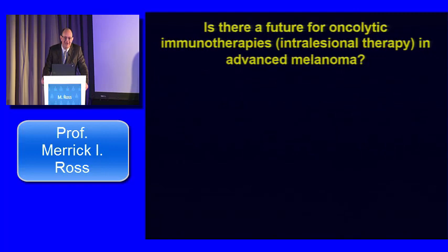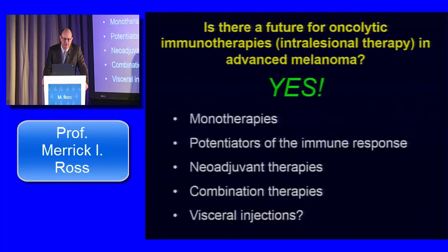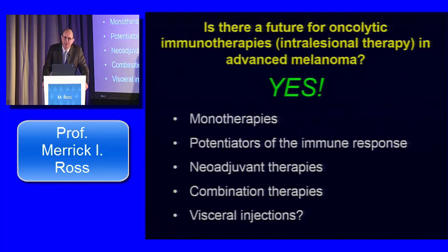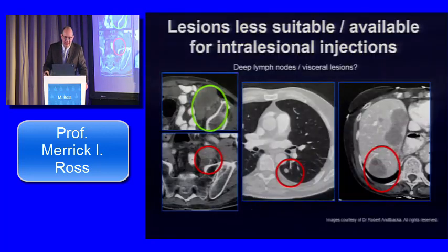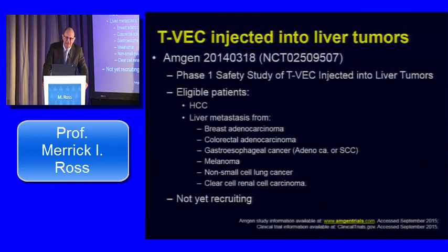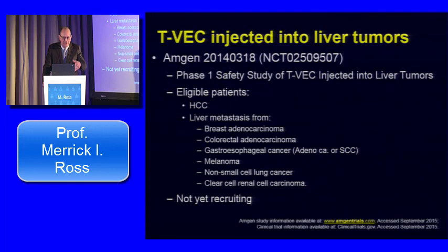The future for oncolytic immunotherapies and intralesional therapy in advanced melanoma is clearly yes. It is approved as monotherapy, data suggests it potentiates the immune response, neoadjuvant approaches are ongoing, and combination therapies are very interesting. Visceral injections are also being pursued — if you can access a tumor with a needle, you can inject the virus. A planned visceral injection TVEC trial will look at liver tumors. There is already PV10 data in hepatocellular carcinoma, and the planned trial will include HCC and metastatic liver disease from breast cancer, colorectal cancer, melanoma, non-small cell lung cancer, and renal cell carcinoma.